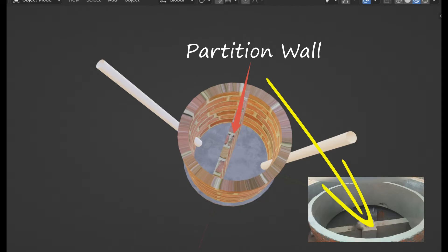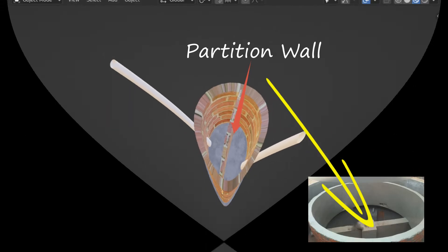Clearing the guide pipe, guide frame, and ledge reveals the lower part of the digester and a partition wall. The partition wall ensures slurry stays inside the digester for the stipulated retention time and prevents short circuiting. Use of a partition wall is done for biogas plants of size 4 cubic meters and above.